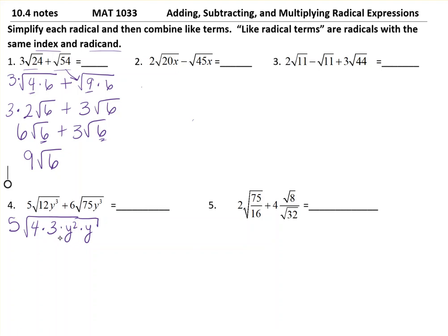My 4 breaks down and my y² breaks down. I get 5 times 2y, leaving everything else under the radical. If I keep going, I get 10y√(3y). Now I'm looking at the second part.